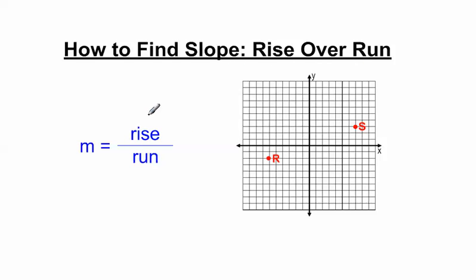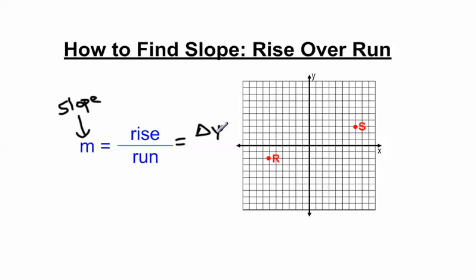The equation for rise over run is M equals rise over run, and remember that M is the letter in math that means slope. Rise is the change in the Y direction between two points, and the run is the change of the X positions of the two points.